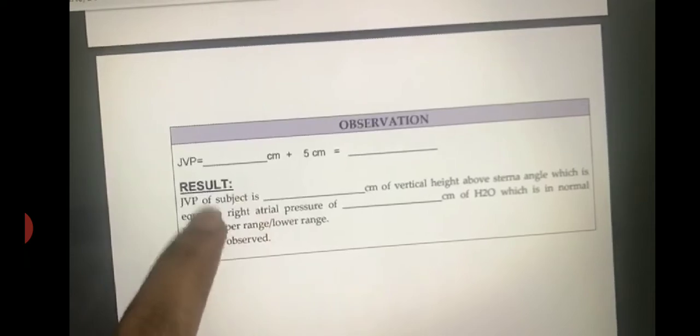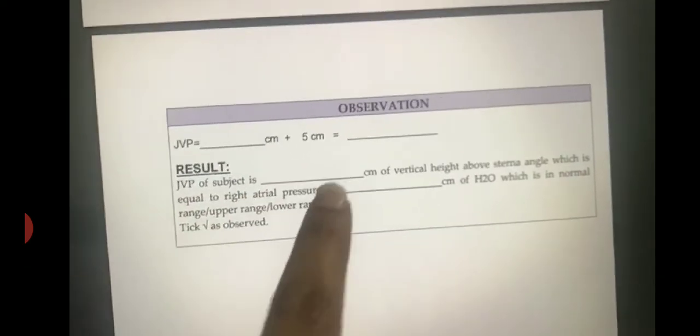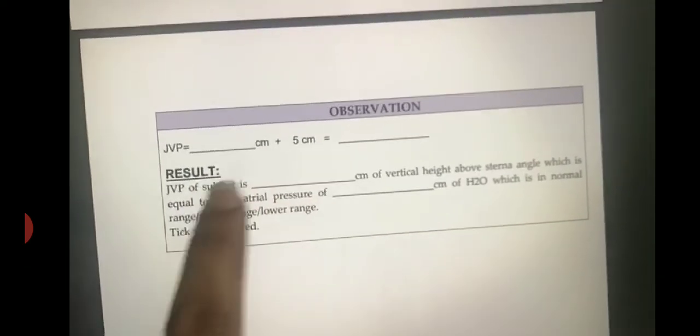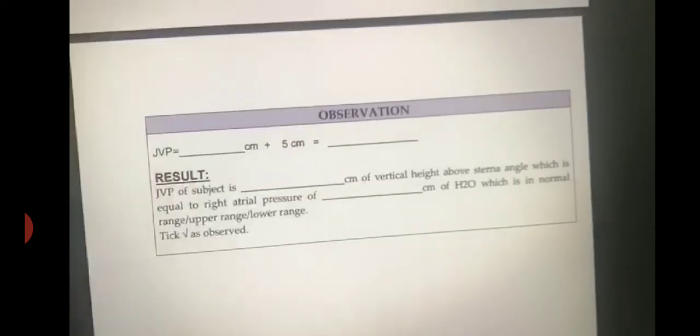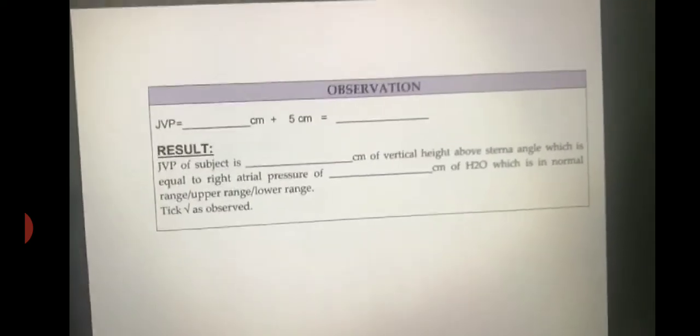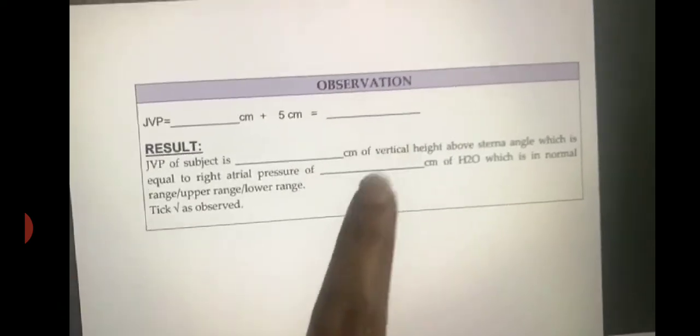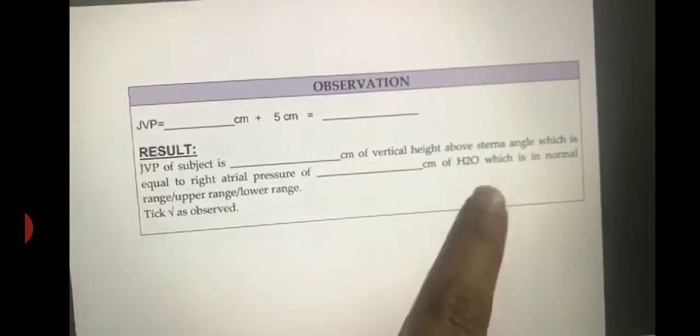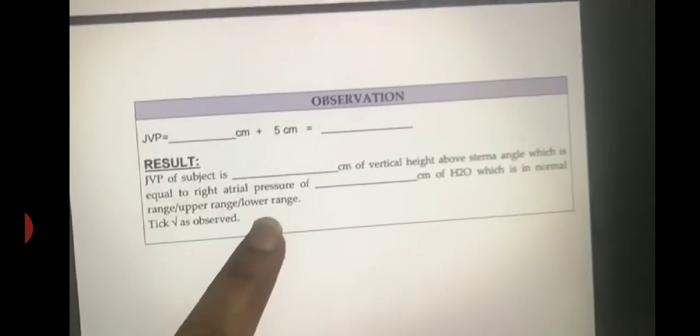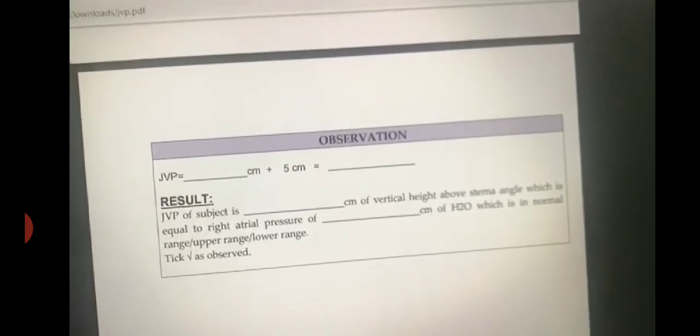The JVP of the subject is two centimeters of vertical height above the sternal angle, which is equal to right atrial pressure of seven centimeters of water, which is within the normal range.